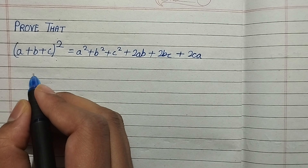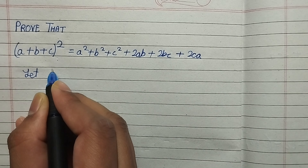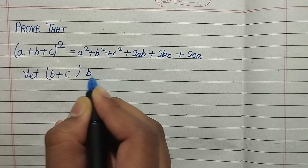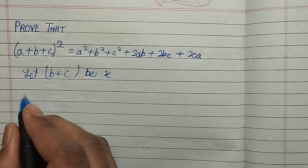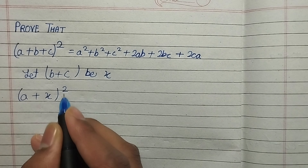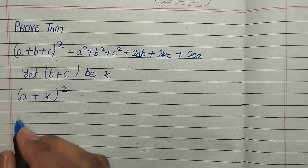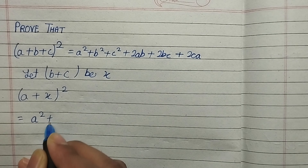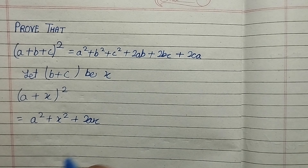Now, for Method 1, consider (a + b + c)². Let x = b + c. Then it becomes (a + x)². This is now in the form of (a + b)², so it equals a² + x² + 2ax.